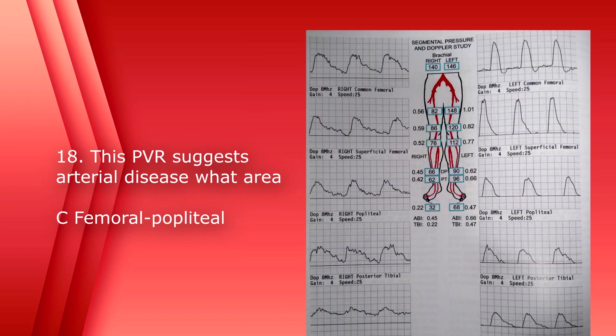Number 18. This PVR suggests arterial disease in what area? A, aorta iliac region, B, iliofemoral region, C, femoral popliteal region, or D, tibial. The answer is C, femoral popliteal. You can see that the common femoral artery has a normal triphasic waveform pattern and an ABI of 1. After that, all the flows are monophasic with ABIs below 1.